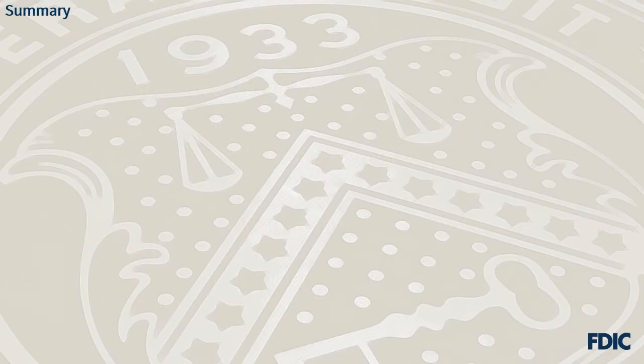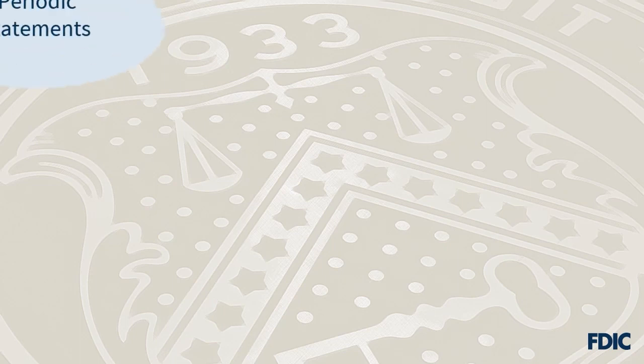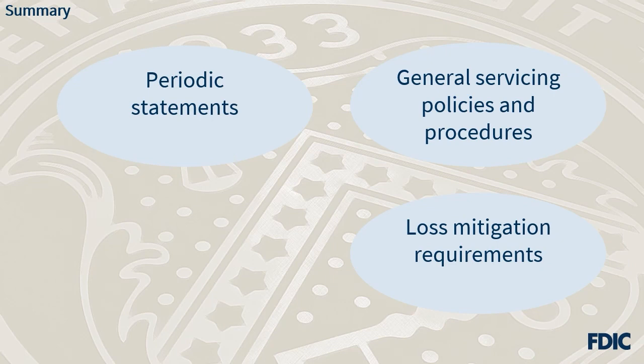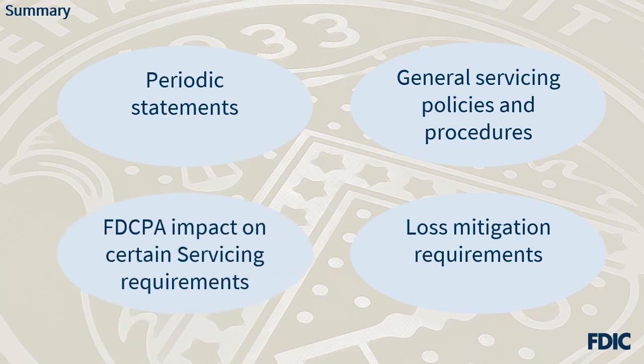We have come to the end of our video on mortgage servicing rules applicable only to large servicers. In this video, we talked about requirements for large servicers related to periodic statements and general servicing policies and procedures. We also discussed some of the loss mitigation requirements applicable to large servicers, as well as the interplay between the Fair Debt Collection Practices Act and certain requirements of the mortgage servicing rules related to periodic statements and early intervention with delinquent borrowers. There are other loss mitigation requirements applicable to small servicers. Thank you for watching this video on the mortgage servicing rules. We hope you found it both useful and informative.